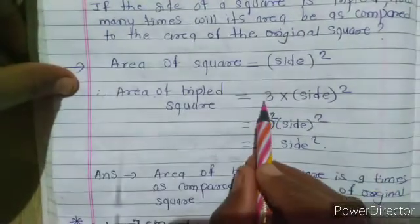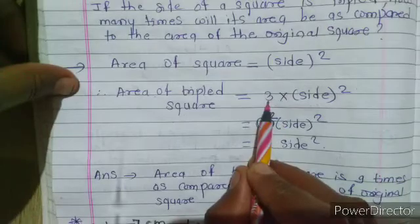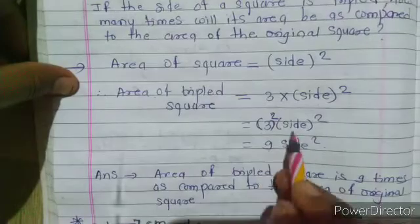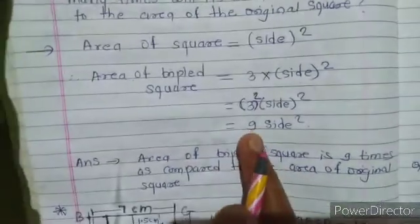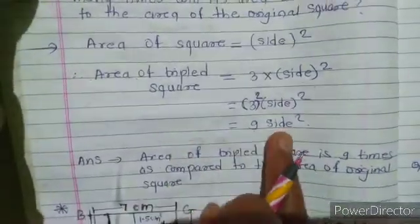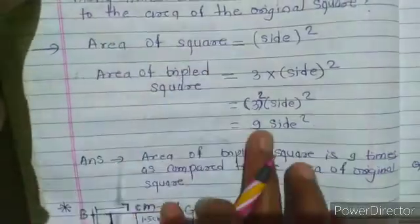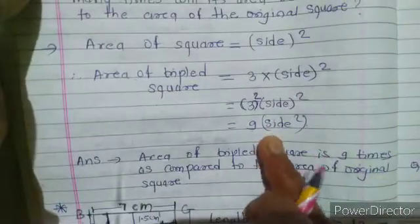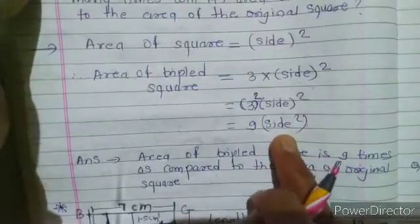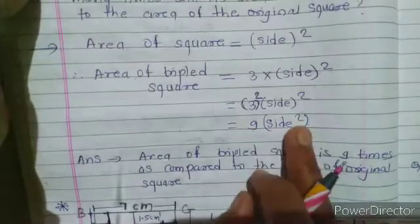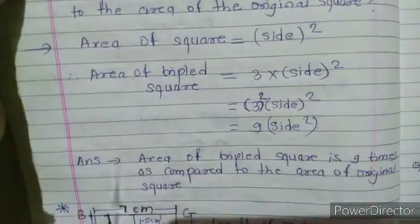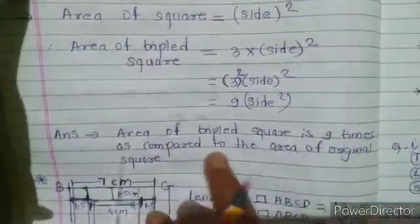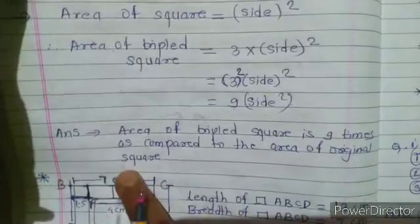So the area of the tripled square is 3 into side, all squared, which equals 9 times side squared. The original area is side squared, and the new area is 9 times side squared. So the area of the tripled square is 9 times the area of the original square.